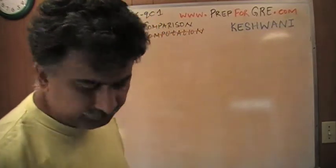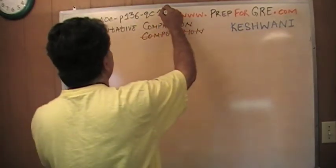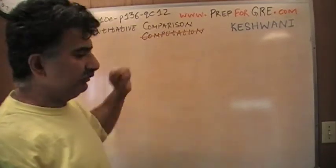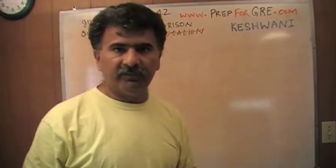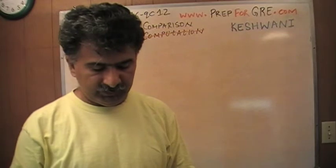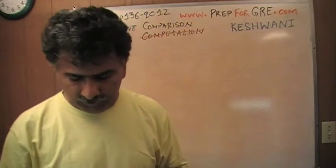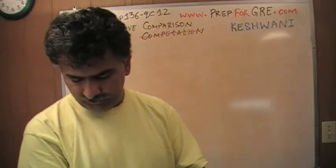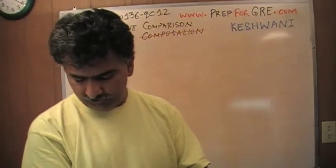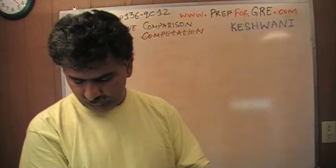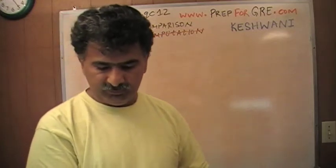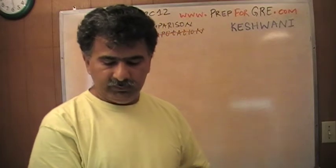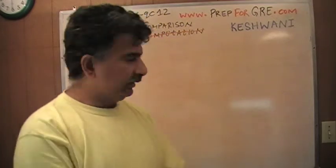There are altogether 15 problems in this set, 15 quantitative comparison problems. The first five are easy, the next five are medium, and the last five are hard. How are you going to tell how hard the hard questions are? If you go to page number 189, on that page they give you the answer key. Turn to page 189, look at the answer key for section number four, question number one through 15.